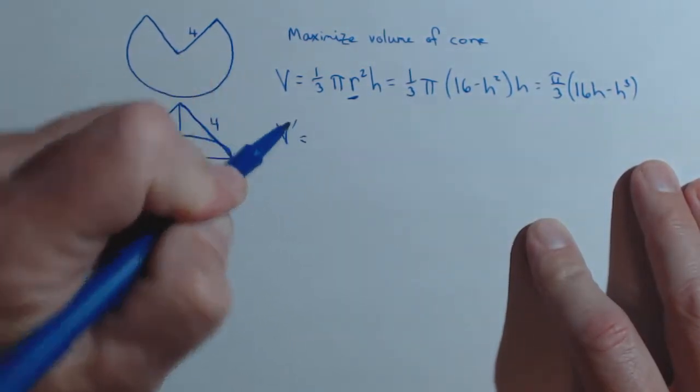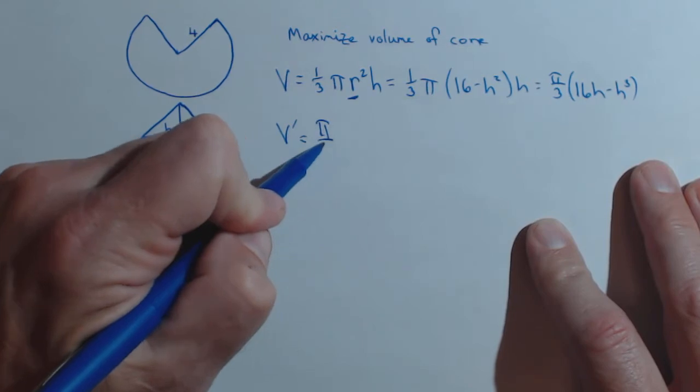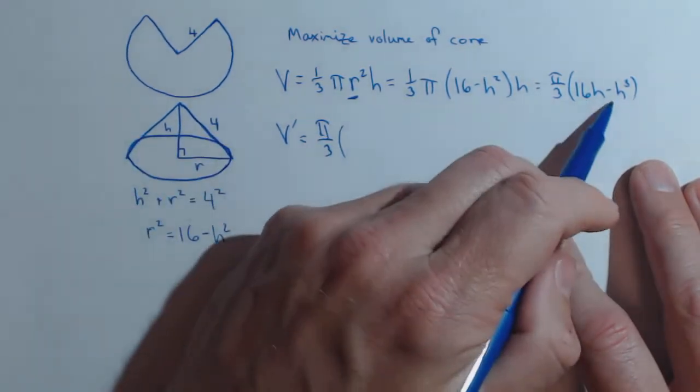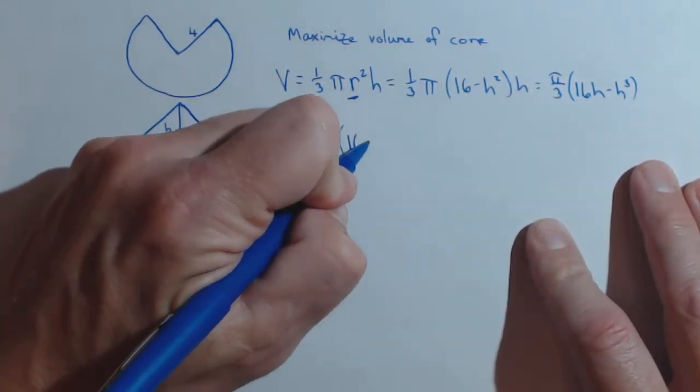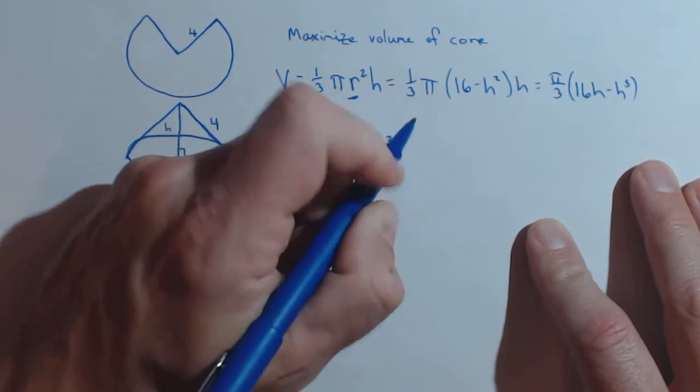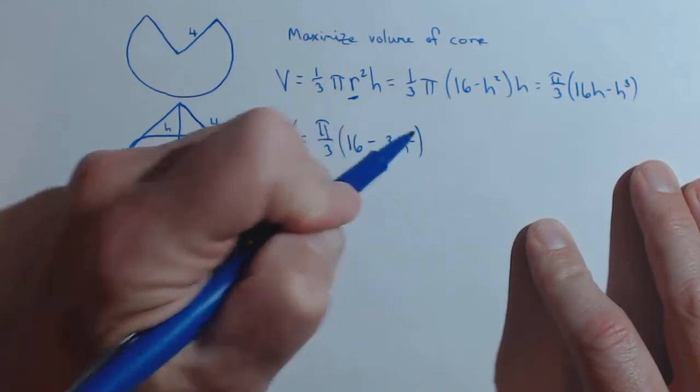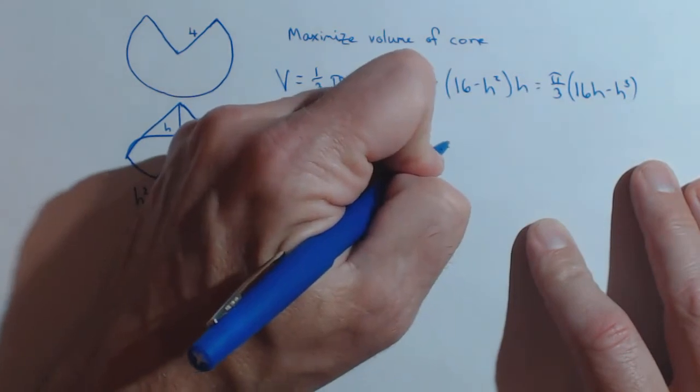So let's see what happens when we take the derivative. Now pi over 3 is just a constant, and then we'll take the derivative piece by piece. Derivative of 16h is 16. Derivative of h cubed is 3h squared.